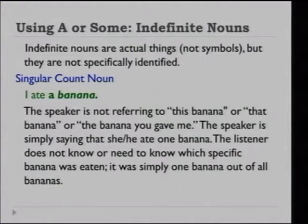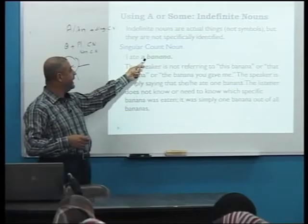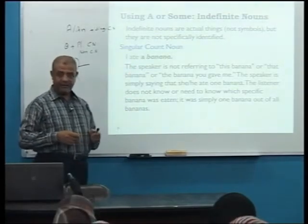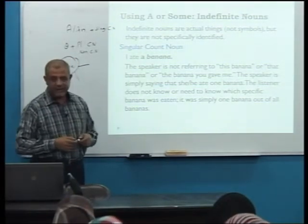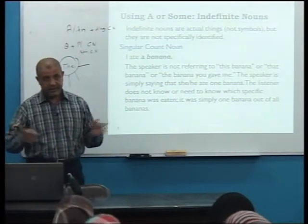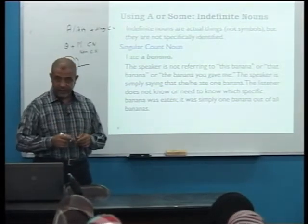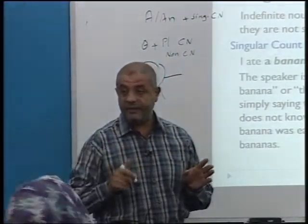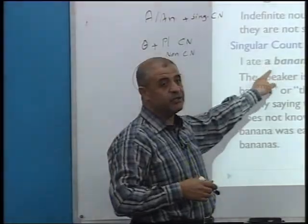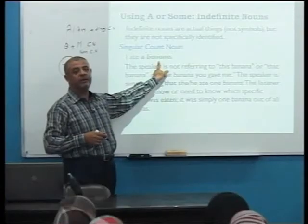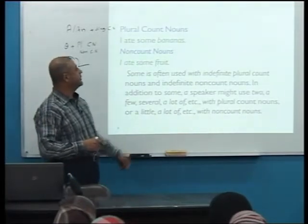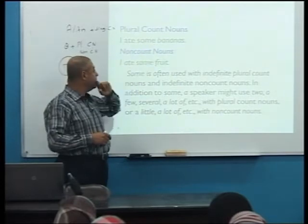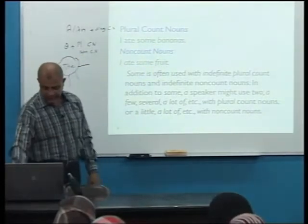We can use a or some with indefinite nouns. When I say 'I ate a banana,' that banana is indefinite. We use 'a' with a singular count noun to make an indefinite noun. You can also use 'some' with plural count nouns and with non-count nouns.